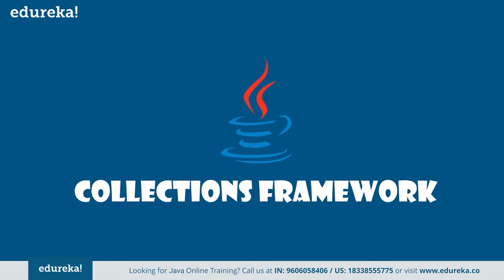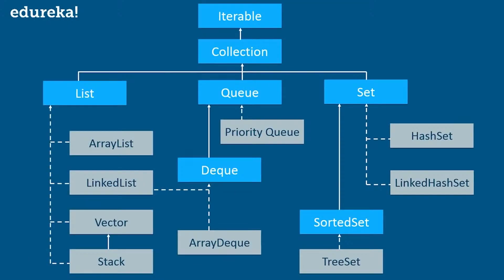A Java collection framework provides an architecture to store and manipulate a group of objects, and it includes interfaces, classes, and algorithms. In this figure, blue boxes refer to the different interfaces and the gray color rectangles define the classes. List is an interface, and ArrayList, LinkedList, and Vector — all these classes implement List as an interface.